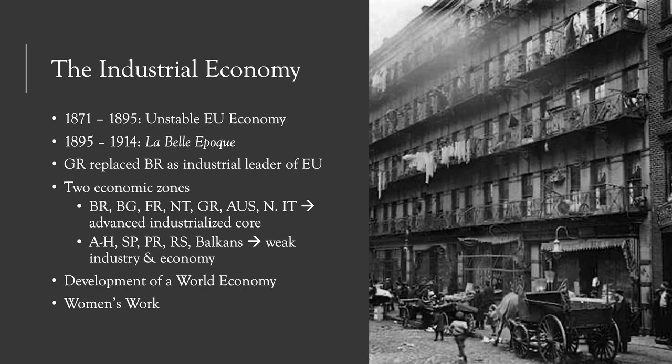The imperialism that begins to take place in the second half of the 19th century will focus on Asia and Africa. As European countries conquer territory in Africa and Asia, this opens up new markets for their manufactured goods, but also provides new resources and raw materials shipped back to Europe. We will learn a lot more about the new imperialism of this period in a later lecture.